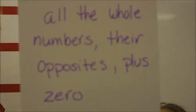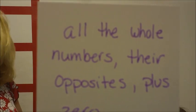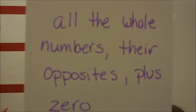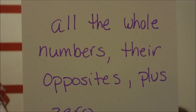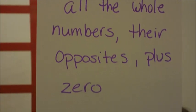Your first vocabulary word is going to be integer. Turn to your I's. Write the word integers and put your definition in. An integer is all the whole numbers, their opposites, plus zero — integers, I-N-T-E-G-E-R-S. Let me show you what that means on the number line.